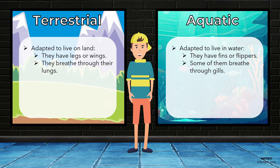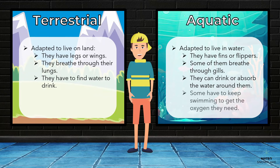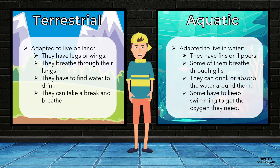Terrestrial animals also have to find water to drink, while aquatic animals can just drink or absorb the water around them. Some aquatic animals, like fish, have to constantly swim to get the oxygen they need to survive, while terrestrial animals can take a break and just breathe.